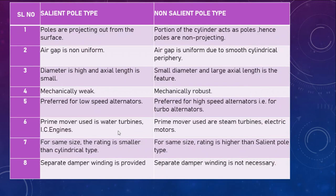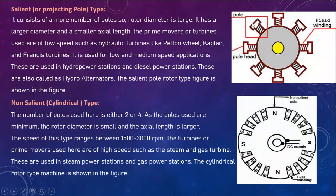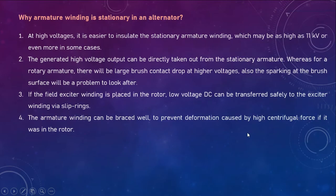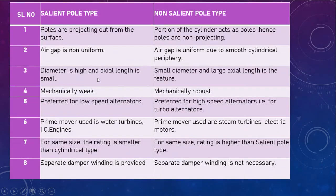Difference between salient and non-salient pole type rotors: in a salient pole, the poles are projecting out from the surface. In a non-salient pole, the poles are not projecting — the cylindrical portion acts as the poles, so poles are non-projecting. The air gap is non-uniform in salient pole type, while the air gap is uniform in non-salient pole due to its smooth cylindrical periphery. Salient poles have high diameter and small axial length, while non-salient poles have small diameter and large axial length.